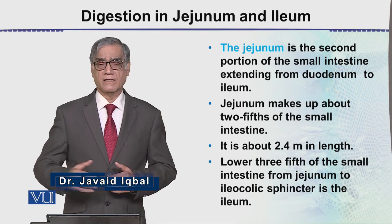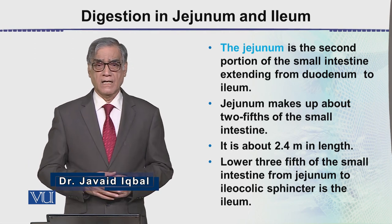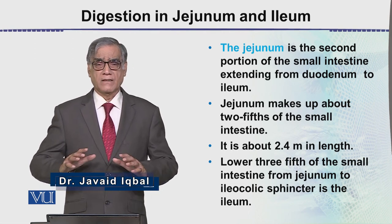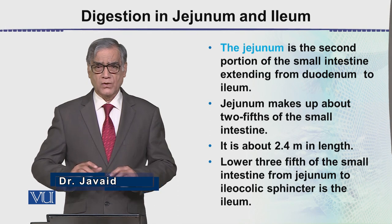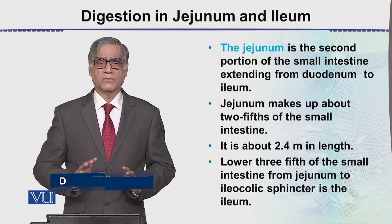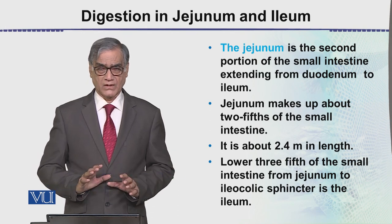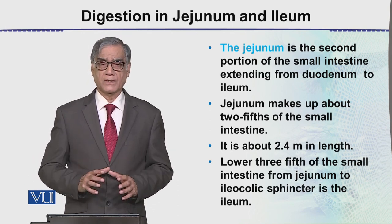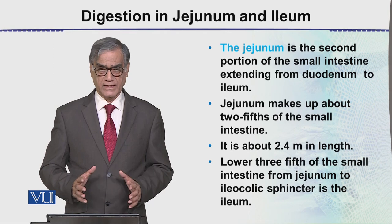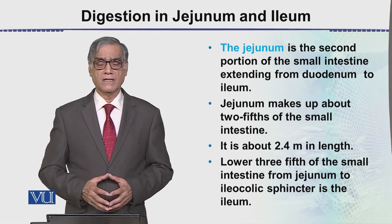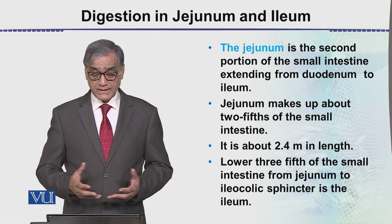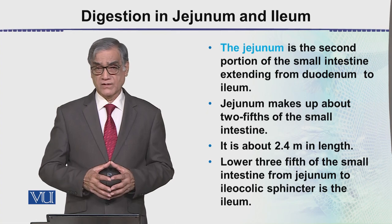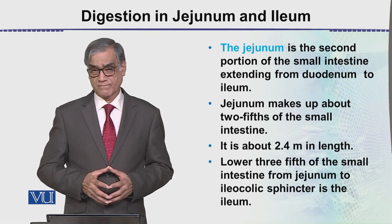These are the parts of the intestine where there is complete digestion and absorption. It is very important that the jejunum makes about two-fifths of the small intestine.